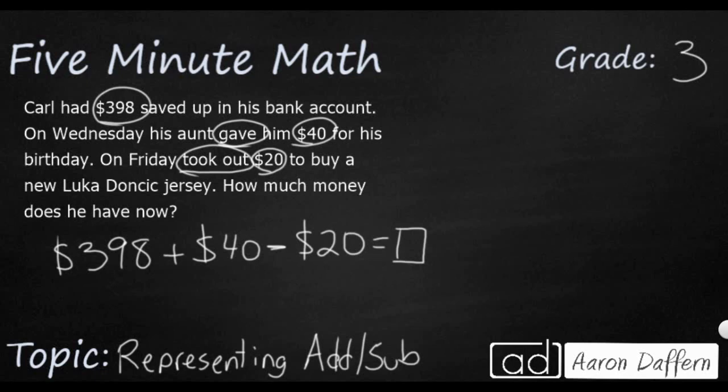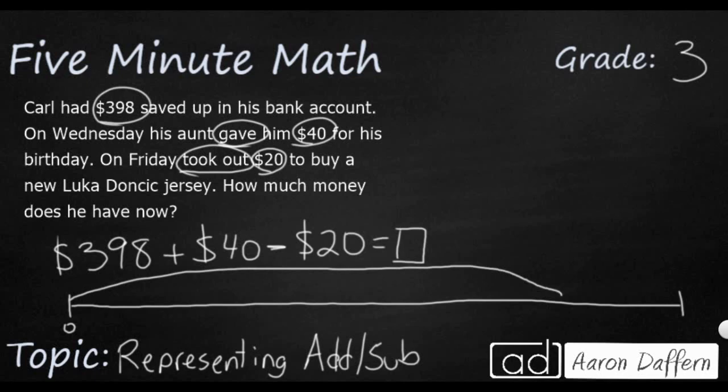So how can we represent that in a different way? Well, if we wanted to, we can kind of make a number line to try to represent how much money he has. Now we're not going to fill in every single number, but let's say we're going to jump from zero all the way right up here to, let's just call this $398. So he's going to go here first. Then he's going to get another $40.